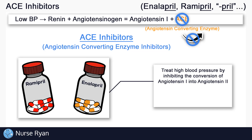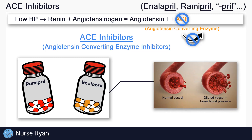Instead we end up with more dilated or open blood vessels, with less sodium and water in the blood, which means our blood pressure effectively goes down. That extra sodium and water simply leaves the body through the urine. This is why ACE inhibitors are often used in the treatment of high blood pressure — also known as hypertension. They can also be used in combination with other medications for the treatment of heart failure.